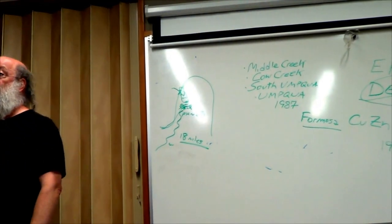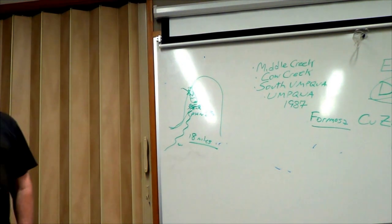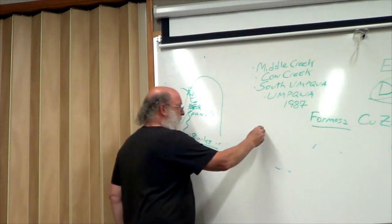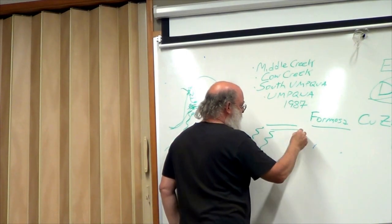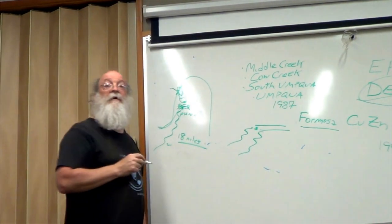So Hart Crouser comes in. This stuff is 17 miles out of Riddle, 23 miles away from Glendale. This mine is in the middle of nowhere. Hart Crouser comes in. Well, we better get electricity up here. So they come up with the idea that they're going to set up a limestone channel.